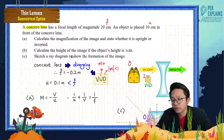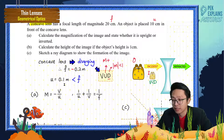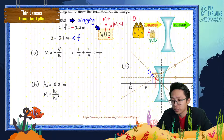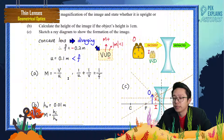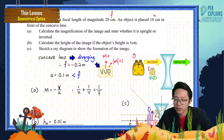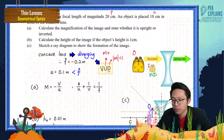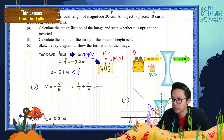To find magnification, we use the formula m = −v/u. Since we don't have the height of the object, we cannot use hi/ho yet. We first need to find the image distance v using the lens formula: 1/u + 1/v = 1/f.